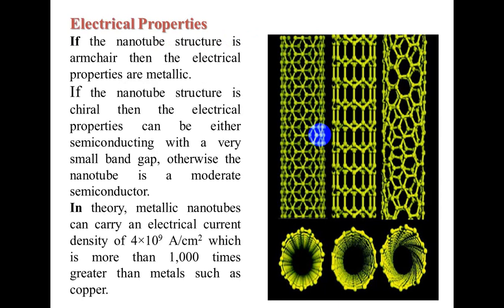The second property is electrical property. If the nanotube structure is armchair, then the electrical properties are metallic. If the structure is parallel, the electrical property can be semiconducting with a very small band gap; otherwise the nanotube is a moderate semiconductor. In theory, a metallic nanotube can carry an electrical current density of 4×10⁹ amperes per centimeter square, which is more than 1000 times greater than metals such as copper.